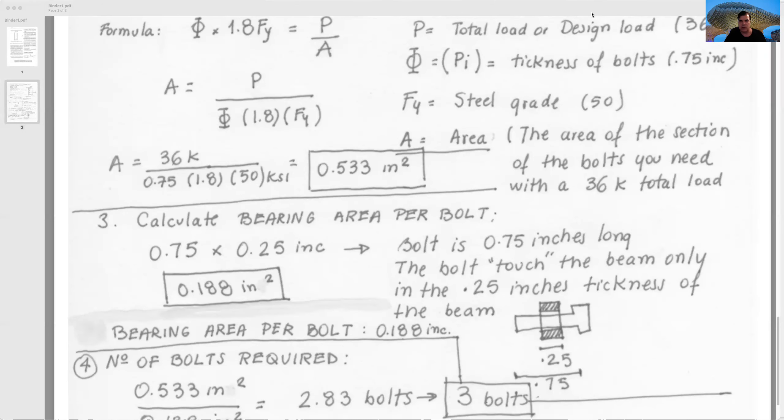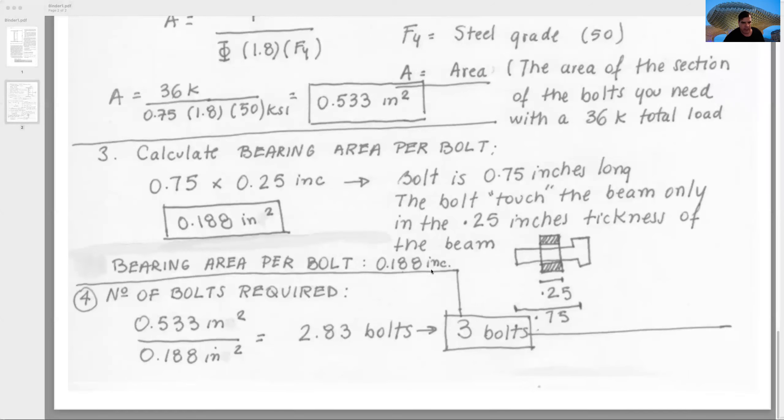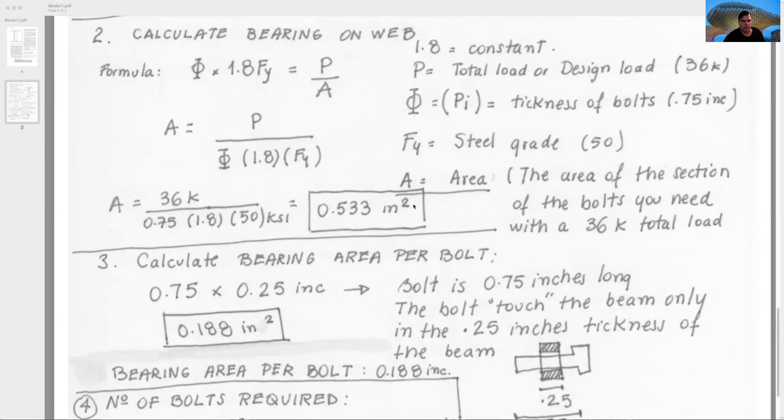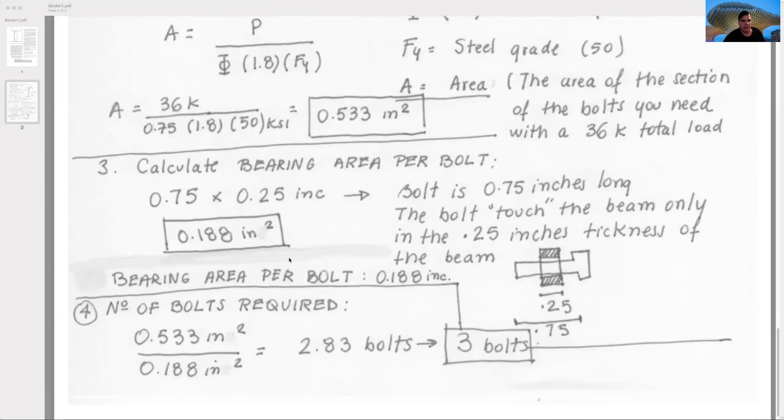Finally, we need to calculate the number of bolts. Here is where most students do mistakes. Be very careful about this explanation. We have from before the bearing of the web 0.533, and we have here the bearing area per bolt 0.188. We divide 0.533 by 0.188, the units are square inches, they disappear, and we have just two numbers. The answer is 2.83 bolts. But this is the trick: you cannot put 2.83 bolts. You cannot take a bolt, take the 83 percent of the bolt, and put it inside of that beam.